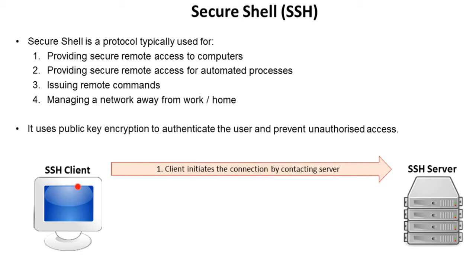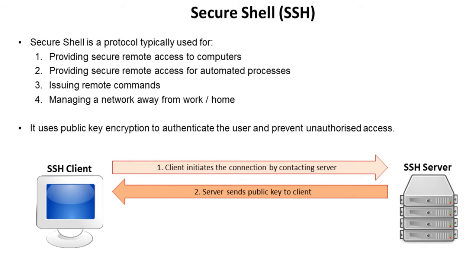Here, remotely away from the place of work, we have a client's PC with the Secure Shell protocol installed. And here we have a server, for example inside an office, possibly behind a firewall, which has the Secure Shell protocol installed as well. The first thing that happens is the client initiates the connection by contacting the server — this is all handled by the protocol. The protocol then sends the public key out to the client.